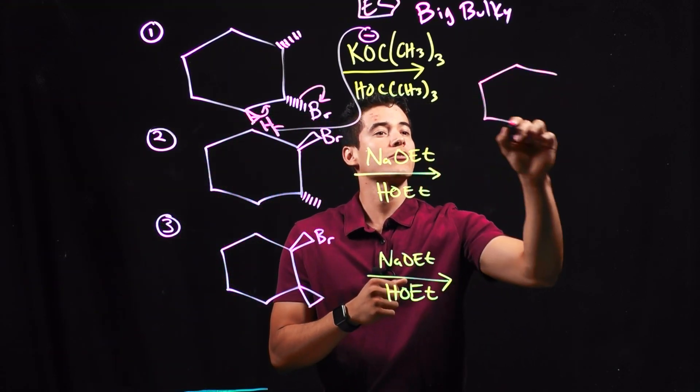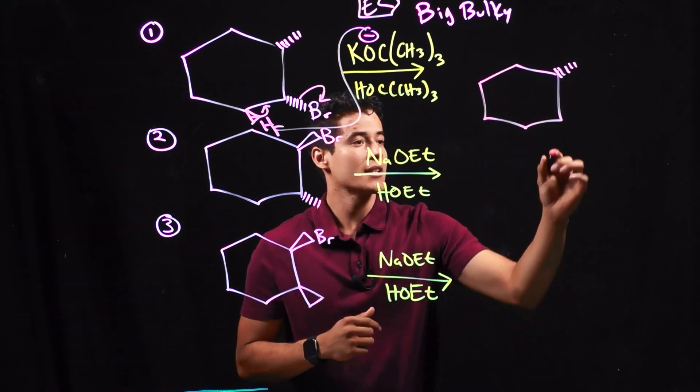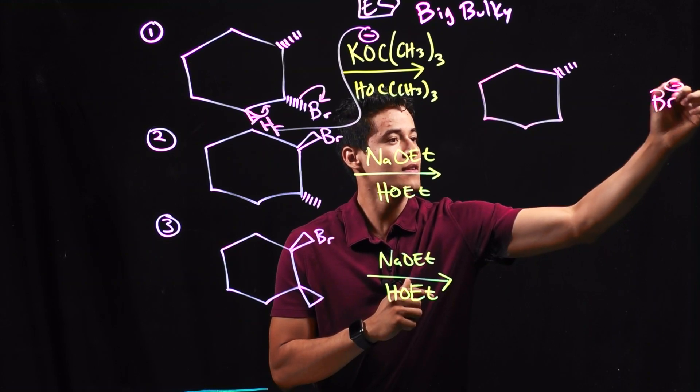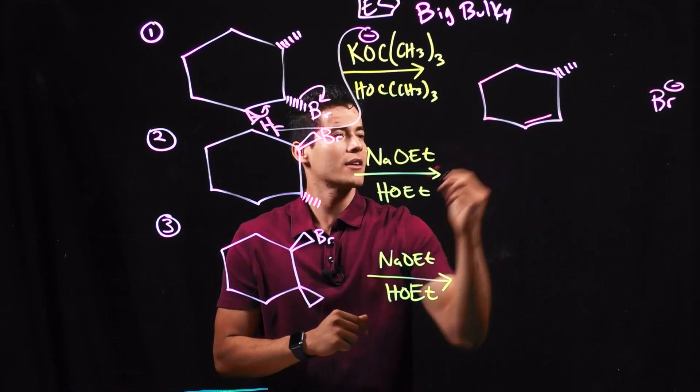So what do you think our final answer is going to look like? Well, we'll go ahead and draw it in. This CH3 was untouched. This Br was kicked out. And I'm left with a double bond right here.